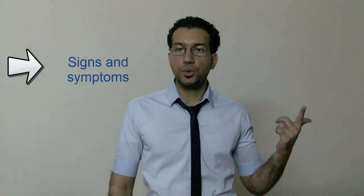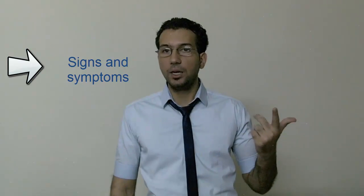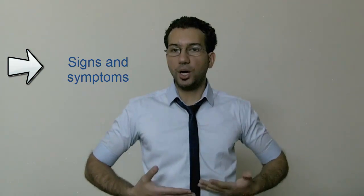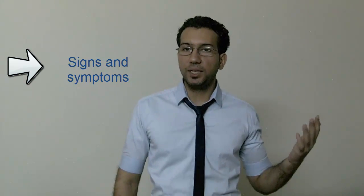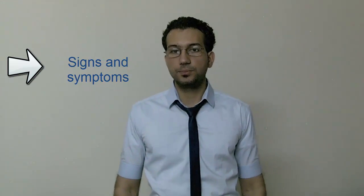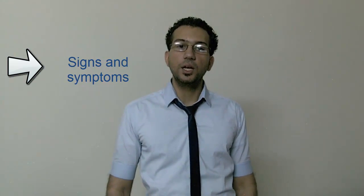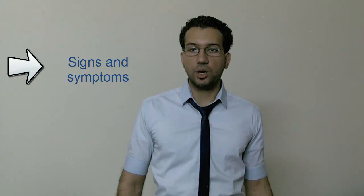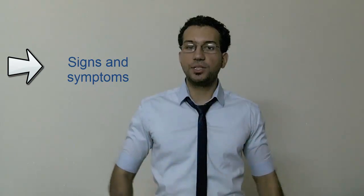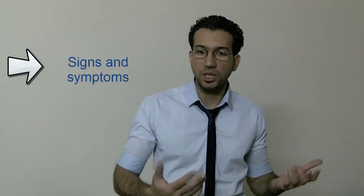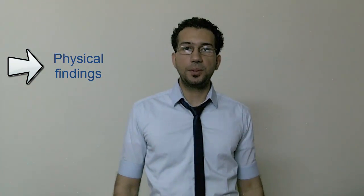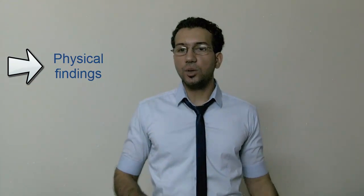Other symptoms include mild nausea, pain or discomfort in the upper abdomen, and upper abdominal pain that wakes you up at night. Additional possible symptoms include bloody or dark tarry stools, chest pain, fatigue, vomiting — possibly blood — and weight loss.